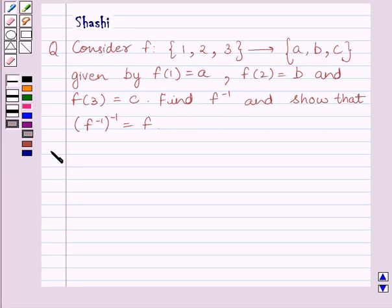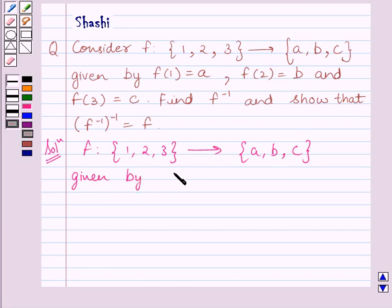Let us now start the solution. We are given function f from set {1, 2, 3} to set {a, b, c} given by f(1) = a, f(2) = b, and f(3) = c.